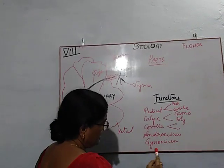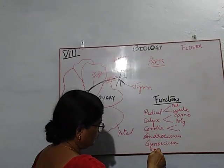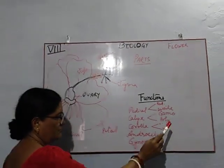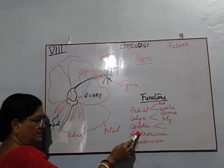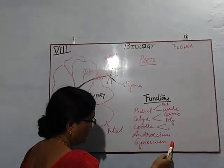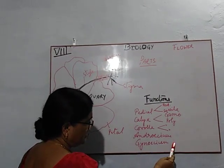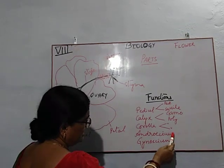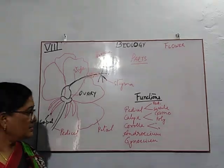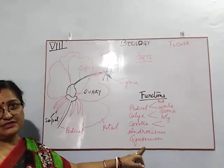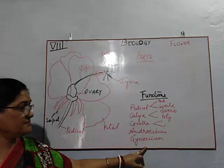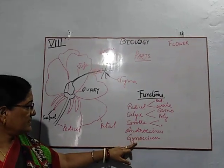The main function of the androecium is to produce the male gamete. The gynoecium has the main function to produce the female gamete, that is the ovule. When they come close together and get contact with each other, they are fertilized, forming the fruit, and the ovule becomes the seed. These are the functions of the androecium and gynoecium.